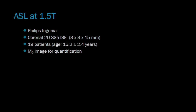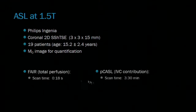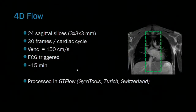We've implemented these sequences on a 1.5T Philips Ingenia and have scanned 19 patients around 15 years old, and we also acquire a separate proton-density weighted image for quantification. The FAIR total perfusion image is acquired in a single breath hold taking 18 seconds, and the PCASTLE IVC contribution is acquired with more signal averages in three and a half minutes. We also acquire a 4D flow to compare with those differential flow measurements, using 24 sagittal slices across the junction of the major vessels, taking about 15 minutes. Post-processing was performed in GT flow, and this can also easily take 15 to 30 minutes per subject.